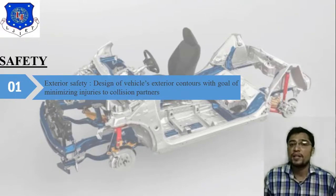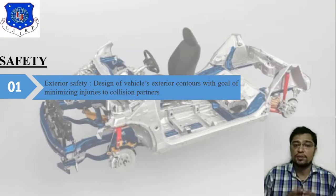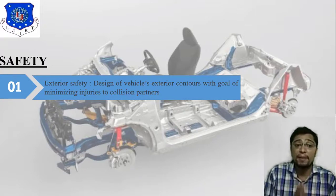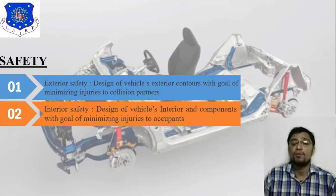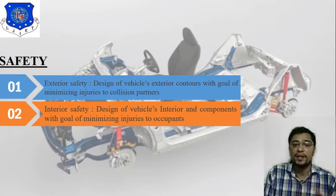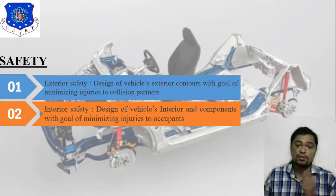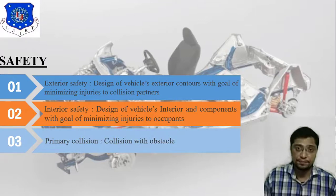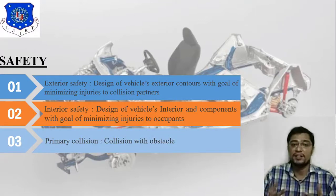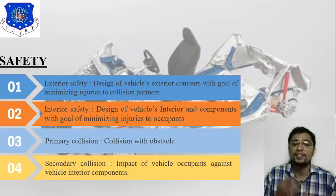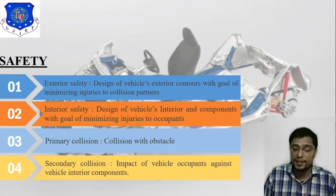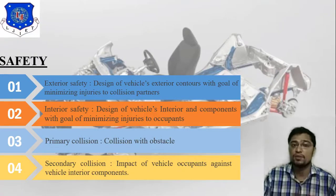Some other criteria: exterior safety is the design of a vehicle's exterior with the goal of minimizing injury to pedestrians and other road users. Interior safety is the design of a vehicle's interior and components with the goal of minimizing injury to the occupant. Primary collision is collision with an obstacle; secondary collision is the impact of vehicle occupants against vehicle interior components.